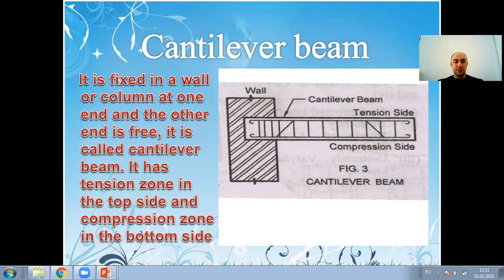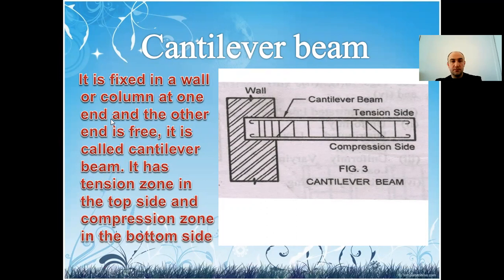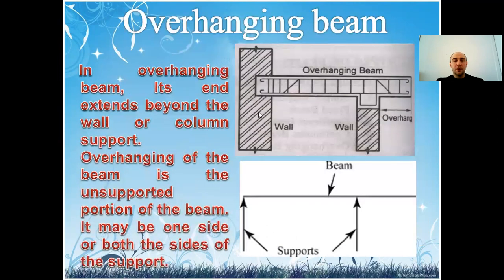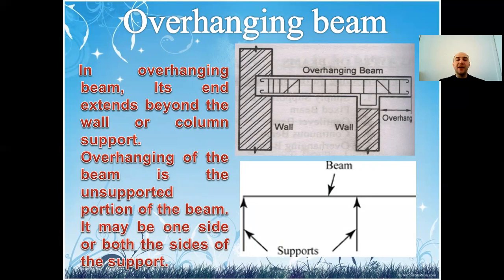An overhanging beam is defined as a beam that has one or both ends stretched out beyond its supports. It can have a number of supports. In other words, it is a beam where a cantilever portion is hanging out of a simply supported beam.